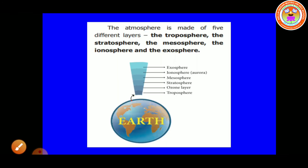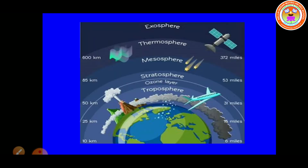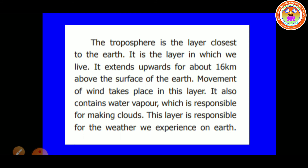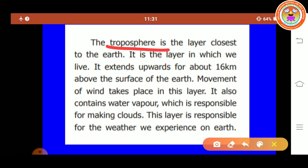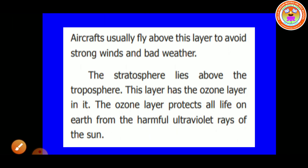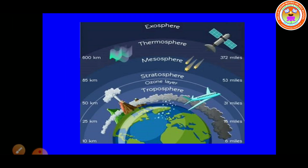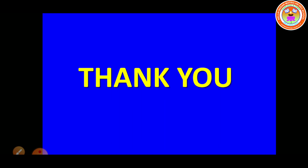So what are the five layers of the atmosphere? Troposphere, Stratosphere, Mesosphere, Ionosphere, and Exosphere. Which layer is closest to the Earth? Troposphere. Which is the second layer? Stratosphere. Which is the third layer? Mesosphere. And the outer layer? Exosphere. Okay students, I hope you have understood the composition of air and the atmosphere. Thank you, children.